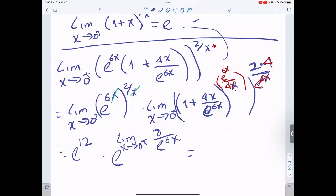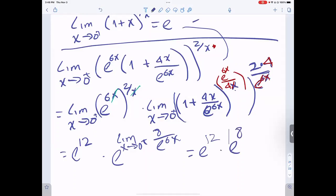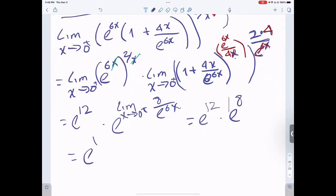And then we're going to have, and the answer is going to be e to the 12 times e to the a, which is e to the 12 plus 8, which is e to the 20, and this is the answer to the limit.